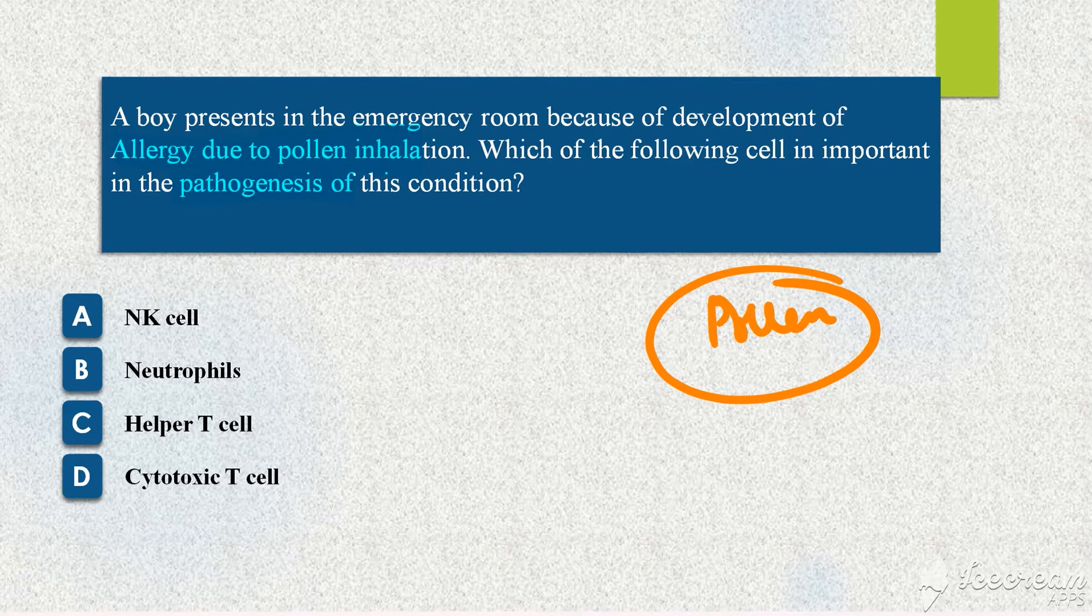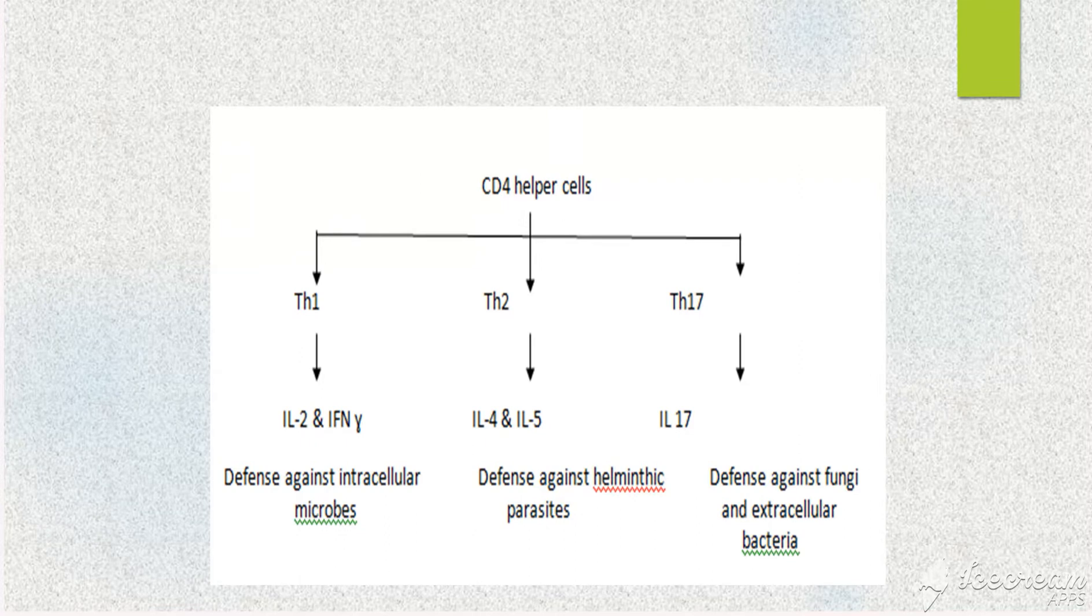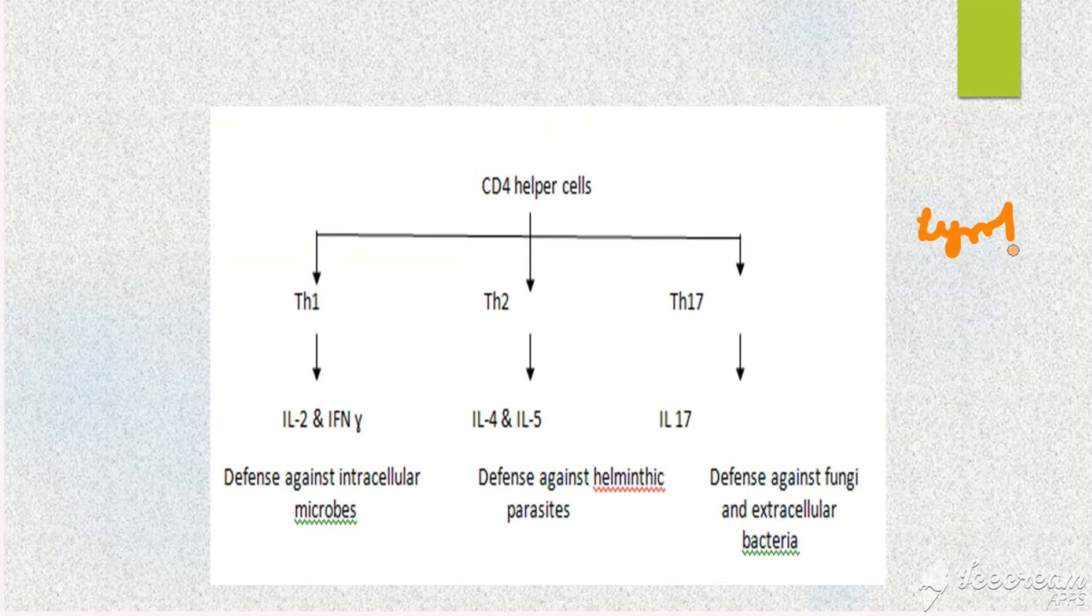For different pathogens you have different types of cells which respond. When you take your immune system you have different lymphocytes: T lymphocytes, B lymphocytes, and natural killer cells.